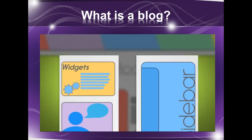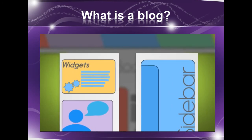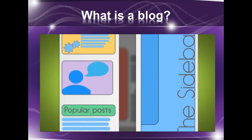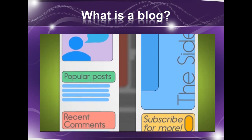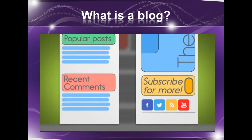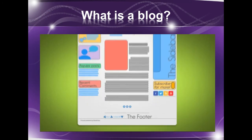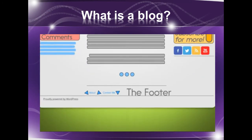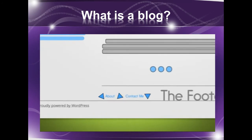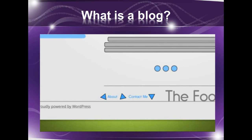Blogs usually have sidebars. This area generally includes widgets and things you want to highlight, such as your favorite links, popular content on your blog, recent activity, subscription options, and social media tools. The footer rests at the bottom of your blog and is typically used to display content that doesn't often change but that you'd like readers to have easy access to, including links to an about page or a contact page.